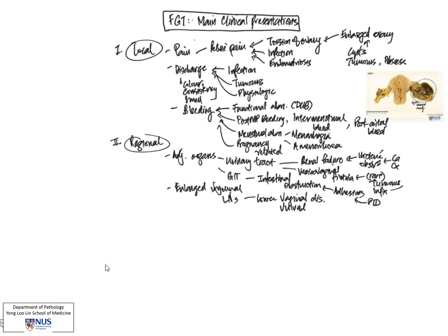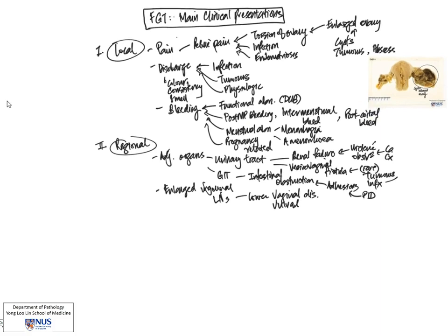The last part of the classification is systemic symptoms. And these would include things like fever, of course you would think of infection. Loss of weight, this can be due to tumors, sometimes a very severe infection as well. And hormonal abnormalities, sometimes these can affect the appearance of the patient or development of secondary sexual characteristics. Also, a very important phenomenon that I want to highlight here is the possibility of acute abdomen or even shock.